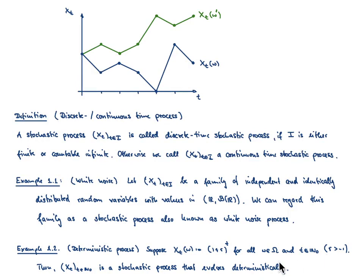This deterministic process might be of interest for us, because it is a model of a bank account with interest rate r. As long as r is strictly larger than 0, the value of your bank account increases over time — or if r is negative, it may decrease, which is typical for our current financial situation.